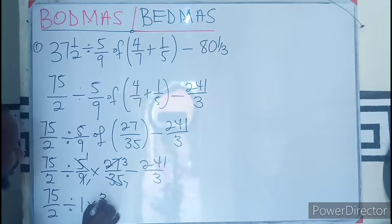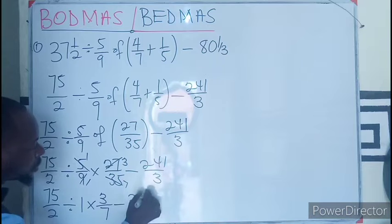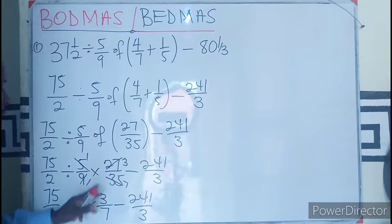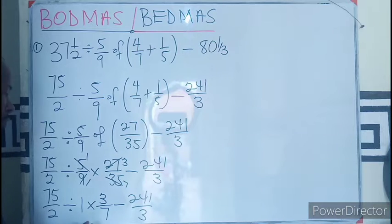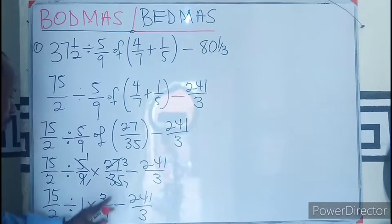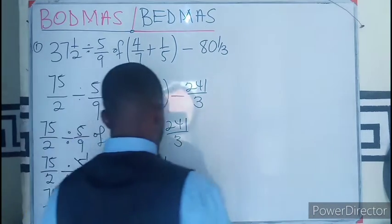We are still having our multiplication, so we need to deal with the division first. But you can see 1 times any number gives us the same number, so this could be changed to 75 over 2.